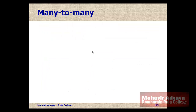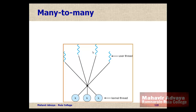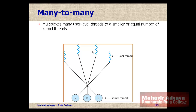The third model is the many-to-many model. As the name suggests, one kernel thread will be associated with one or more user threads. Even if one or more user threads are blocked, the other kernel threads will manage the remaining user threads and continue executing the task. This model multiplexes many user-level threads to a smaller or equal number of kernel threads.